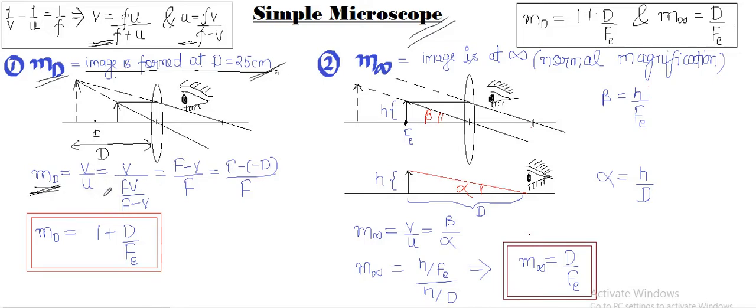If you understand both of them, then look here. Magnification MD will be equals to v by u, and if I replace u as fv upon f minus v, we get f minus v by f. And now in place of v I will put minus d because the image is forming behind the lens at a distance of capital D. While substituting this, I get my first formula: magnification MD equals to 1 plus d by f. You will have to remember this one because we will be using this.